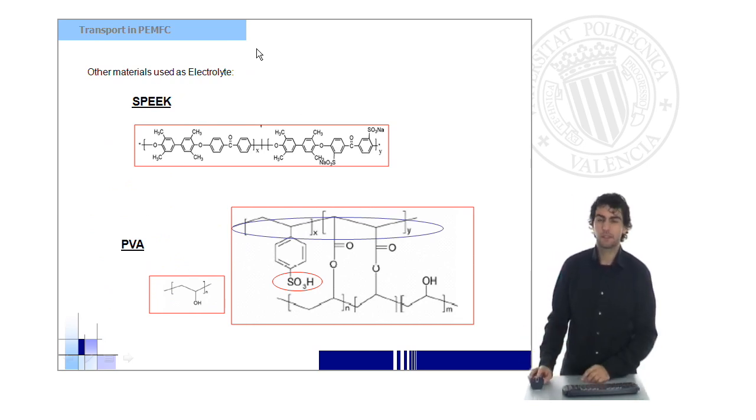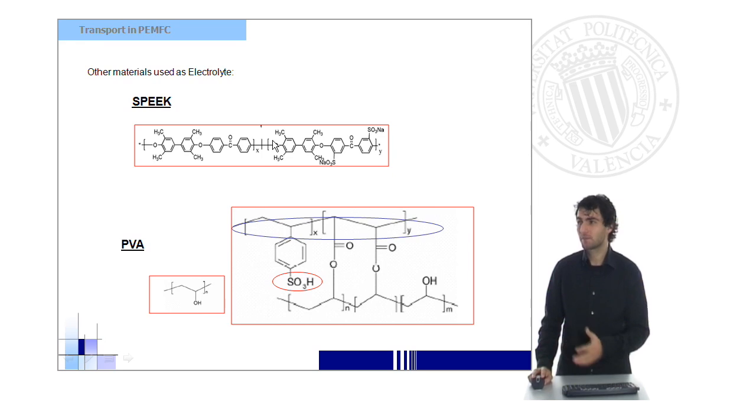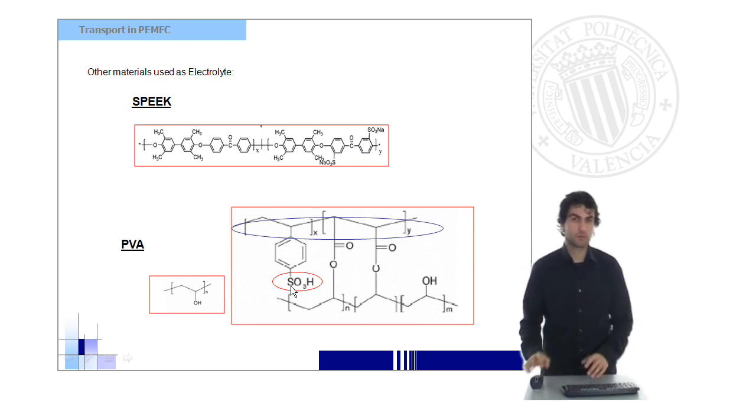Again, these are some of the latest materials which have been under research and investigation, to improve the behavior of Nafion, which we said that this is the benchmark material used in this kind of applications. All of them have a carbonate structure, and some groups, ionic groups, especially sulfonic groups, which will be proton conducting.